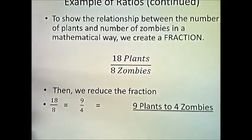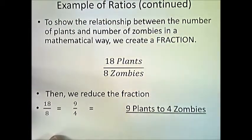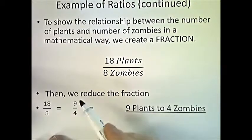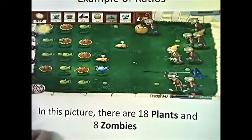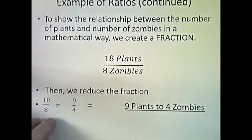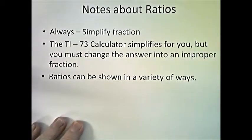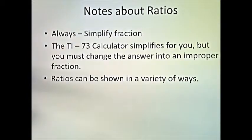This picture shows the relationship between the number of zombies and plants. We create a fraction: 18 over 8, representing 18 plants to 8 zombies. We can then reduce that fraction — 18 over 8 is equivalent to 9 over 4. So the ratio is 9 plants to 4 zombies. When you take tests, they'll always want you to simplify to simplest form, as we did here going from 18 to 8 down to 9 to 4.